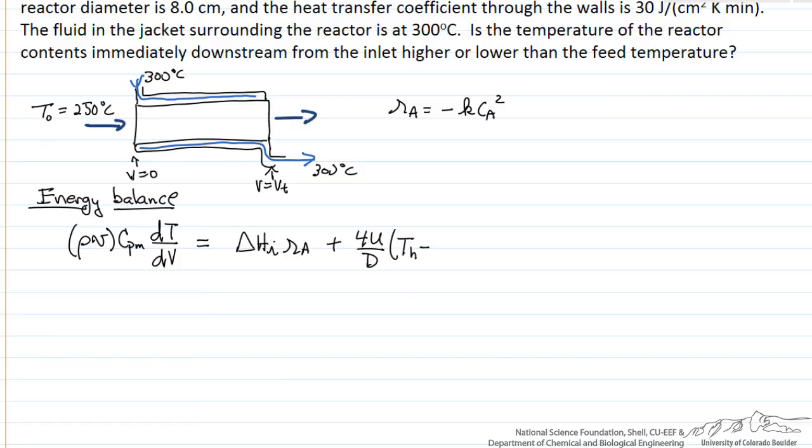And then we have a heat transfer term that looks like this. So the temperature of heating minus the reactor temperature. And D is the diameter, so U is the heat transfer coefficient, which we are given. And D is the reactor diameter, and four over D comes from the ratio of the surface area for heat transfer, divided by the reactor volume.